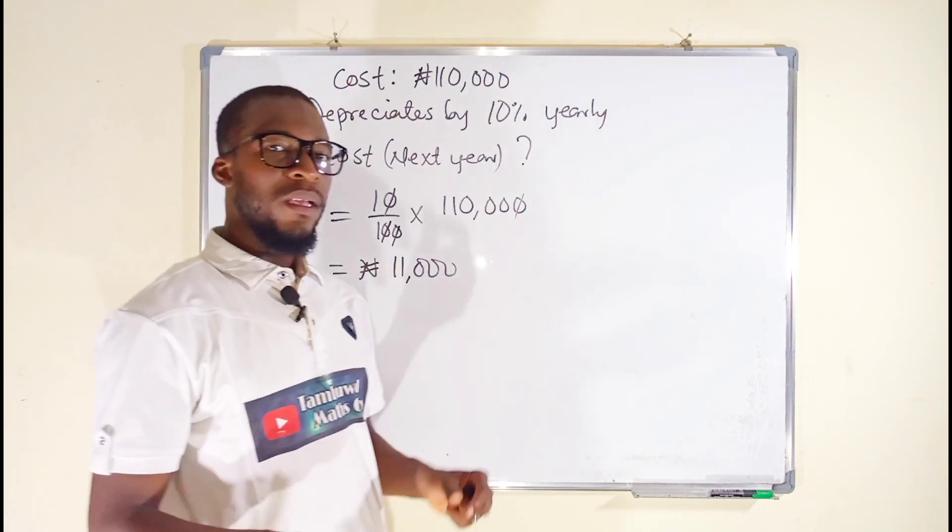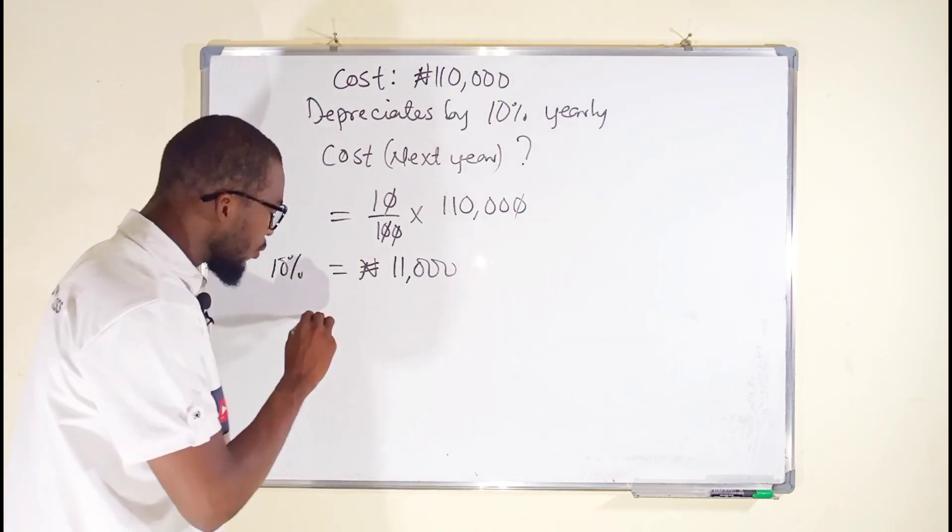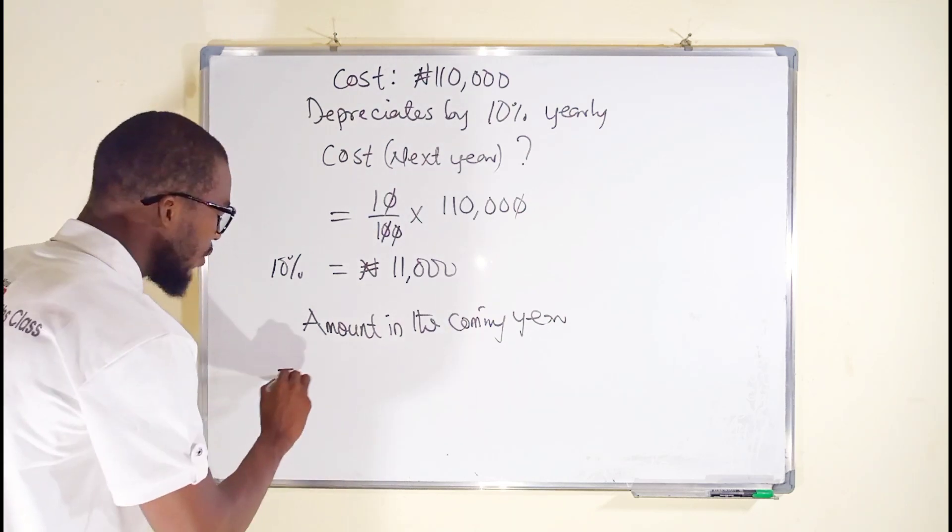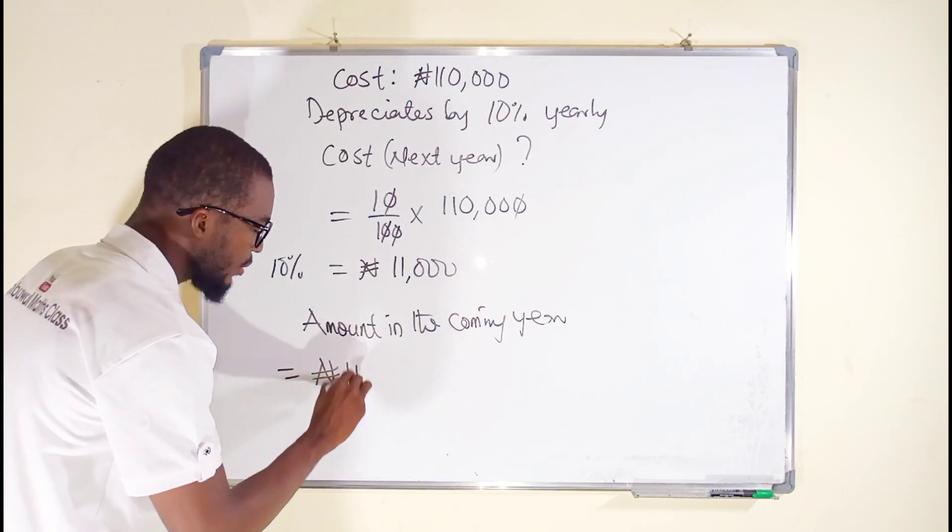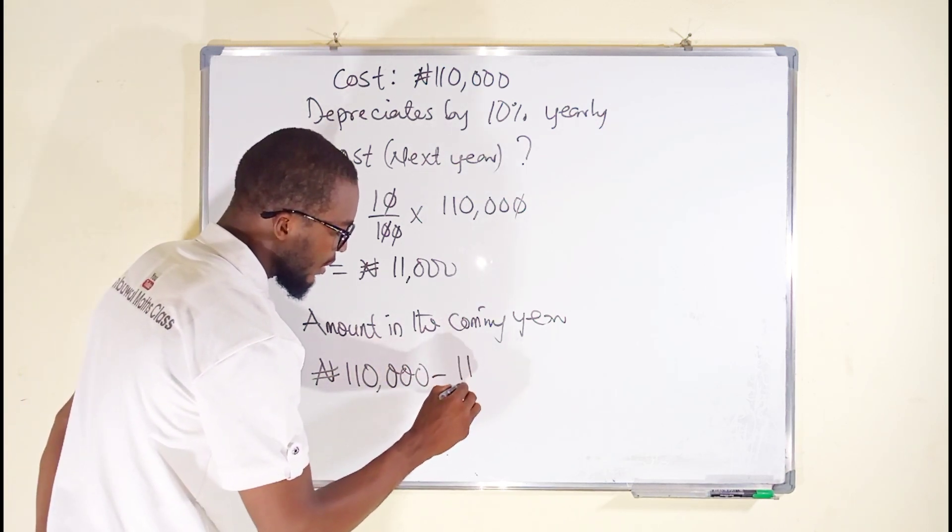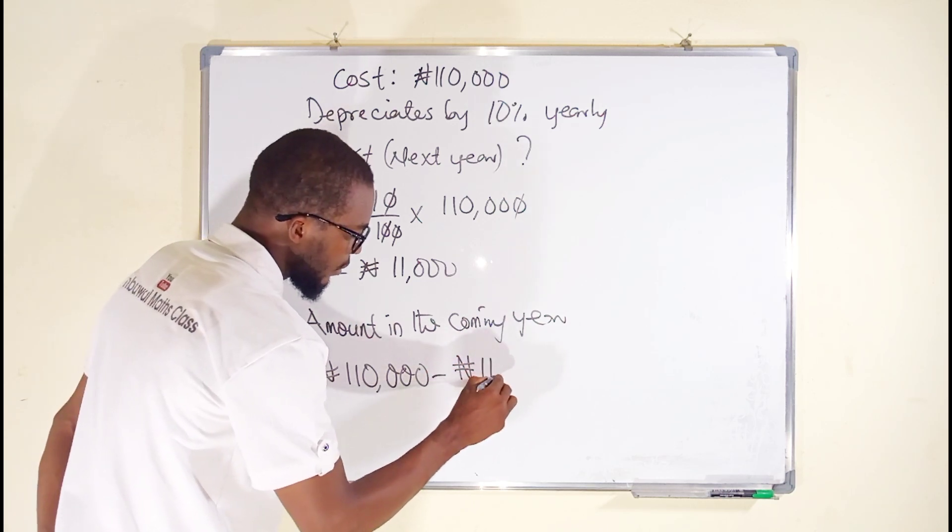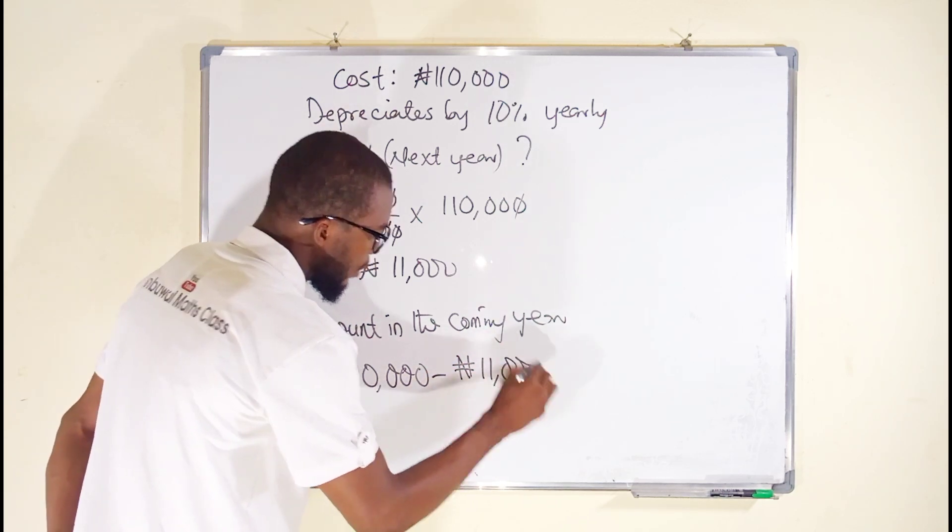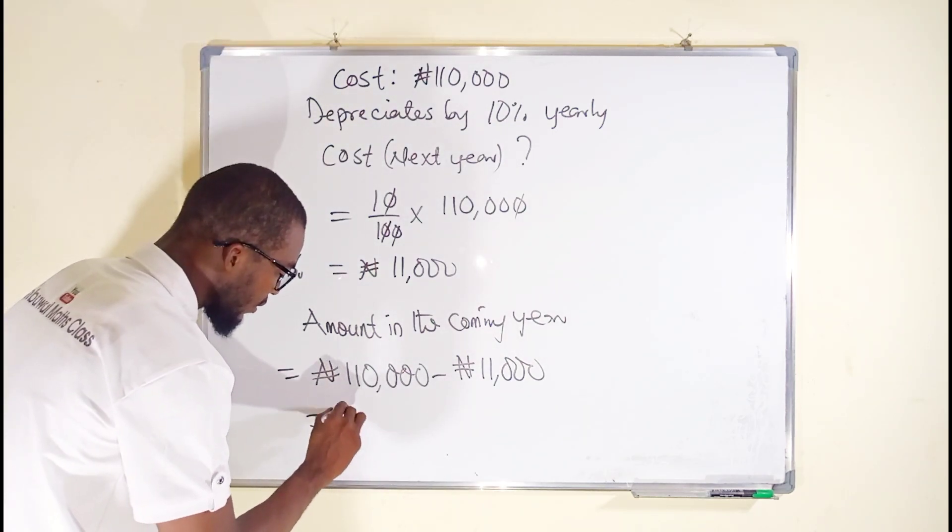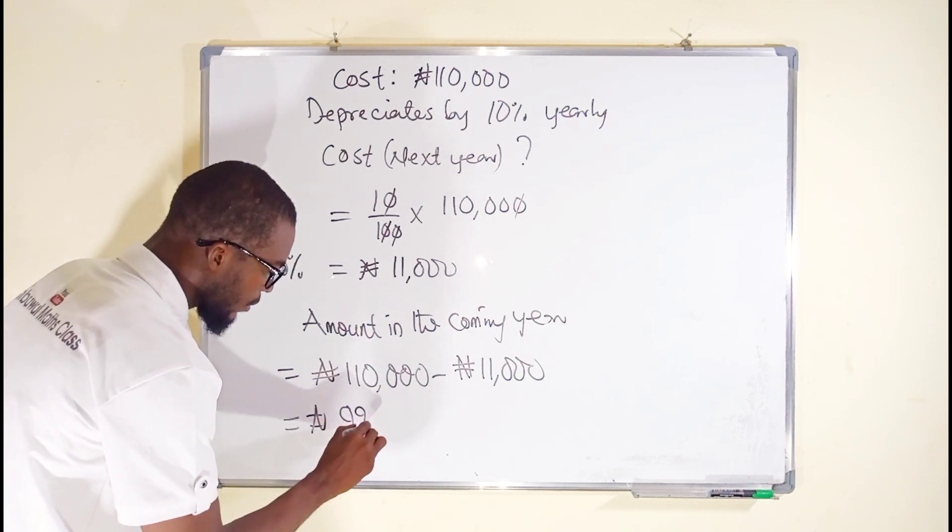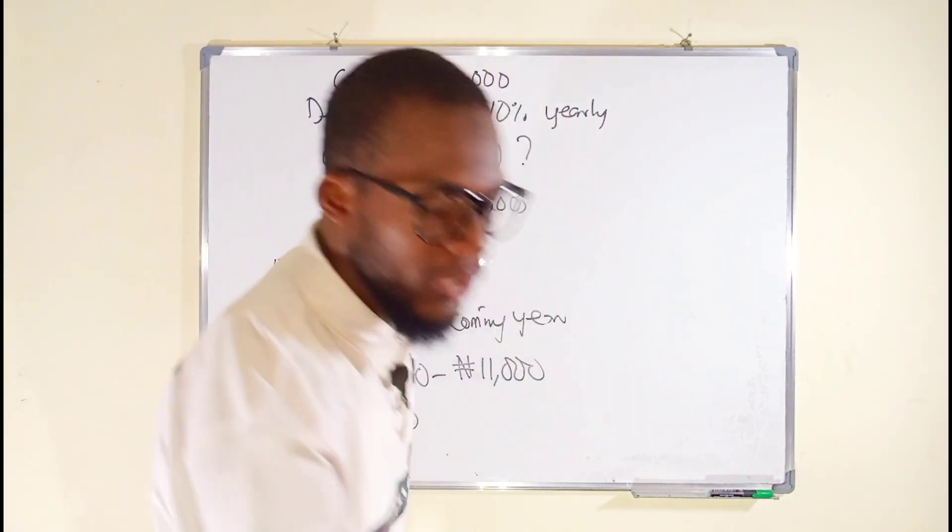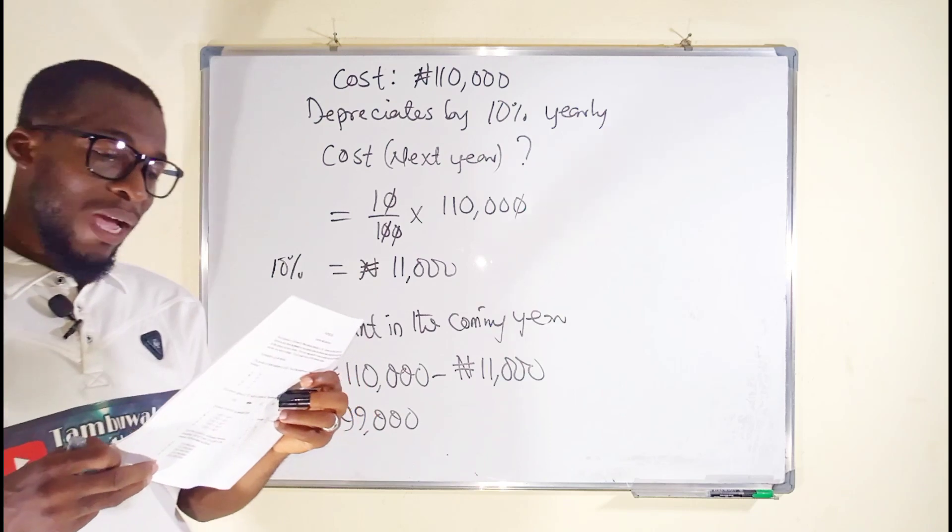So 11,000 naira is the 10 percent of this amount. Amount in the coming year will be equal to the total amount or the principal amount minus the amount we obtain, which is 11,000. And this minus this will give us 99,000. Let me see from the options, we have it as option C. 99,000 will be the amount next year.